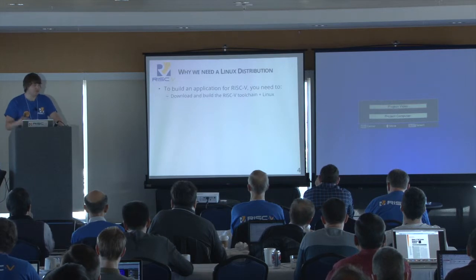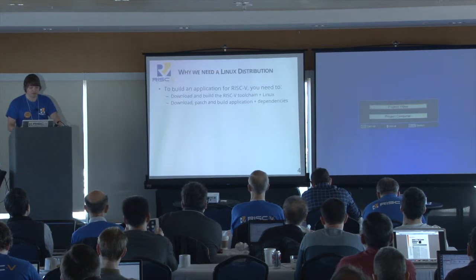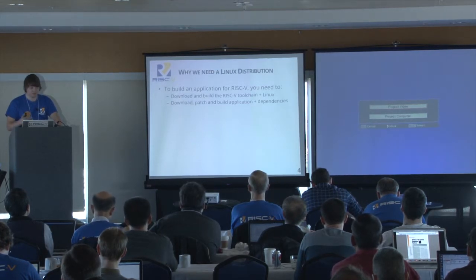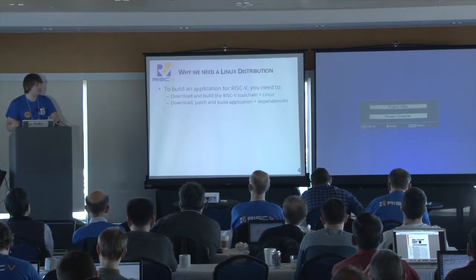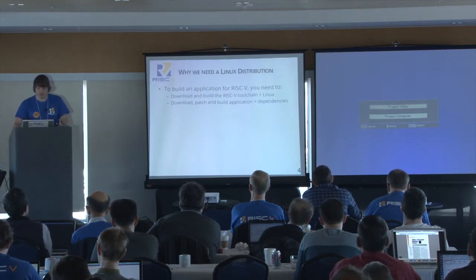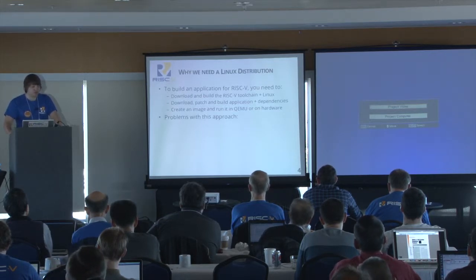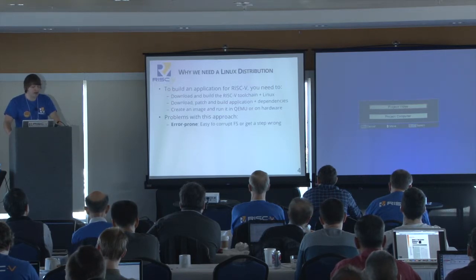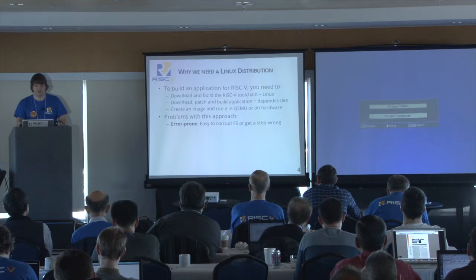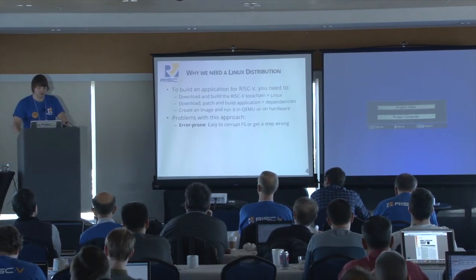You start off by building the RISC-V toolchain, building RISC-V Linux, then you need to download the applications you want to build, patch them, and build the application. You also have to build all the dependencies, install them all into your sysroot, and eventually put them all in an image and run them in QEMU. It's also quite error-prone in the sense that if you get one step in the middle wrong, you can easily run into problems with your filesystem.